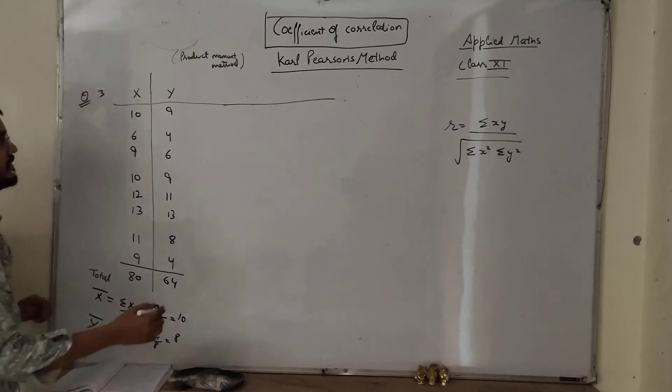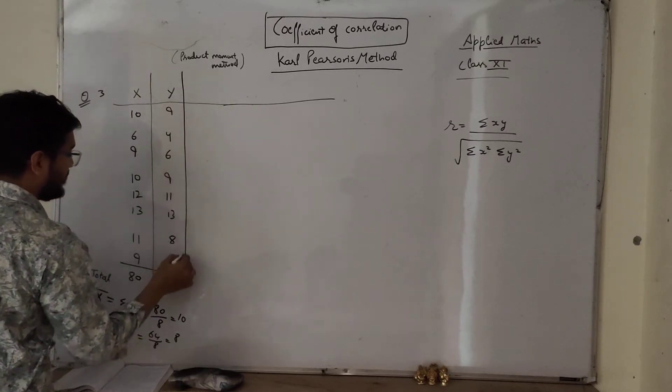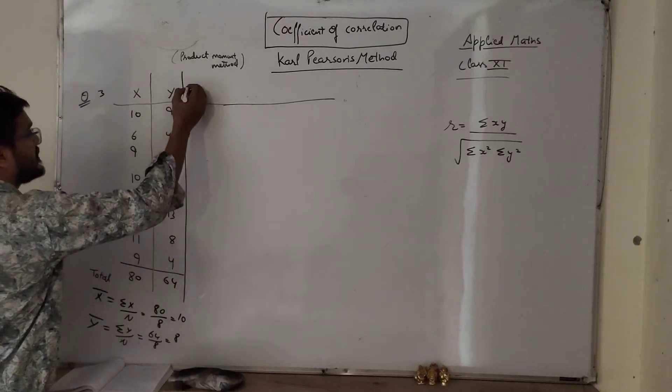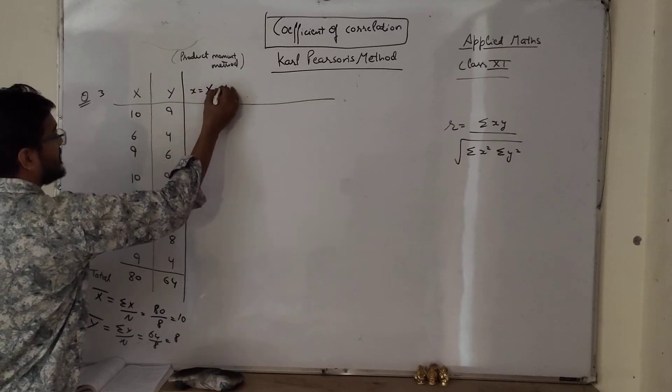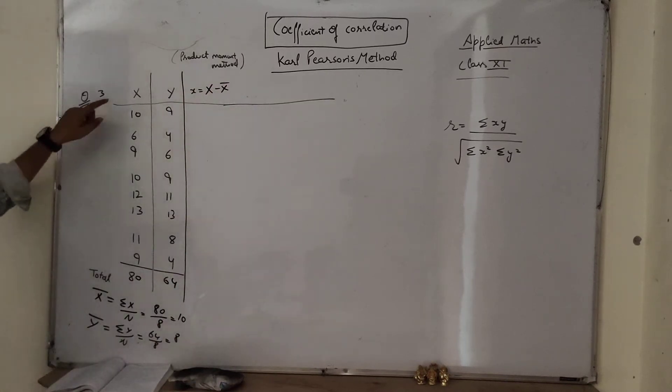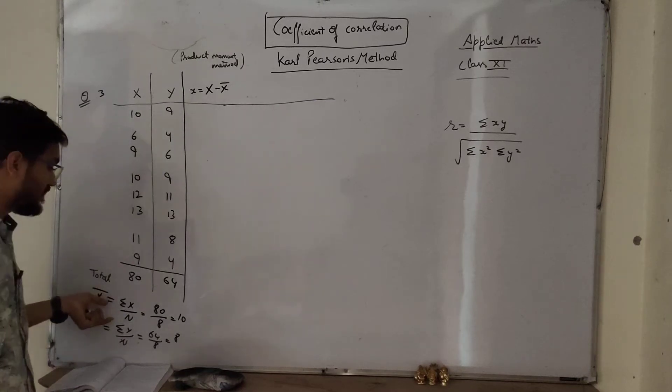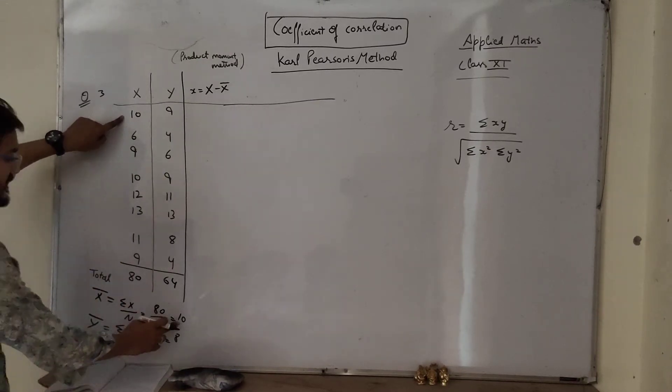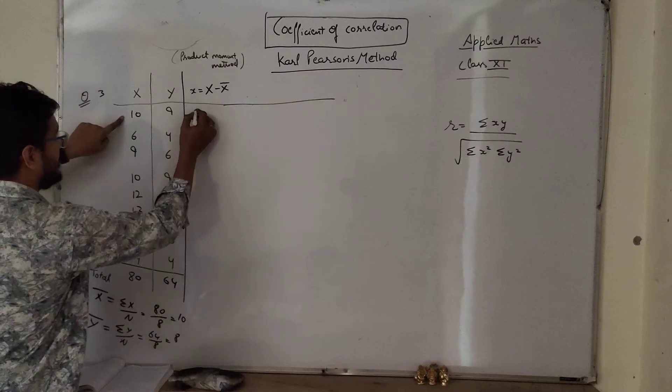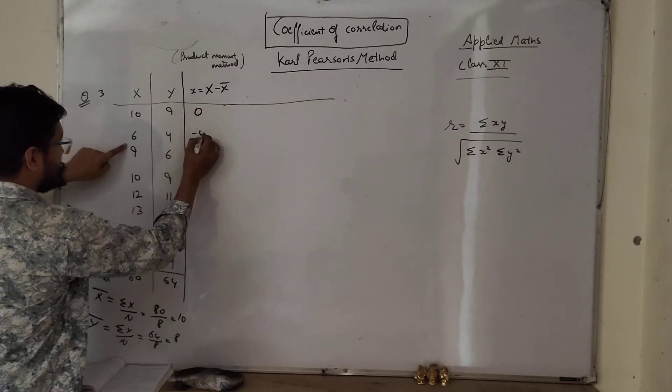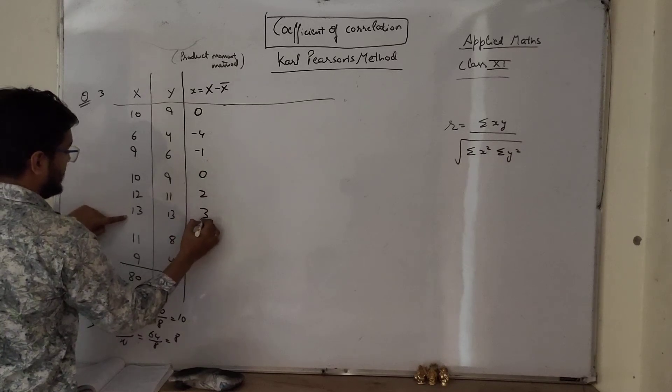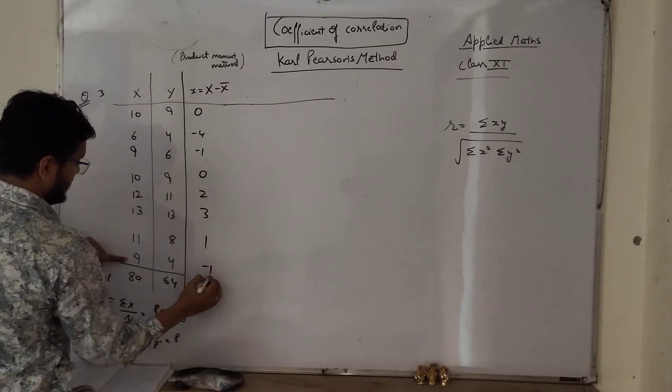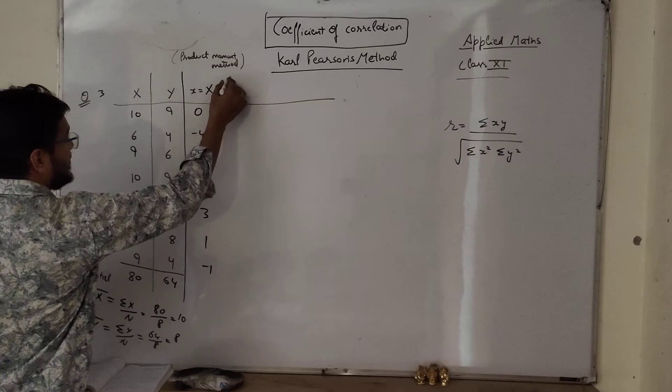So next column is small x. So small x is capital X minus x bar. So this term minus x bar means mean. So 10 minus mean is 10, 10 minus 10 is 0, 6 minus 10 is minus 4, 9 minus 10 is minus 1, 0, 2, 3, 1, minus 1.